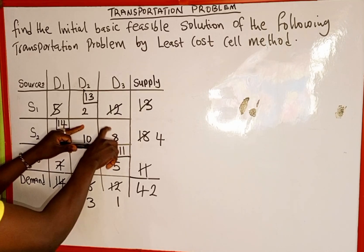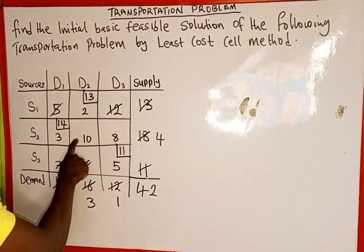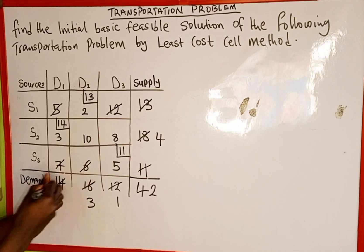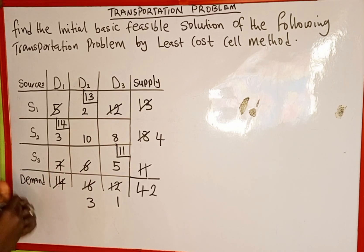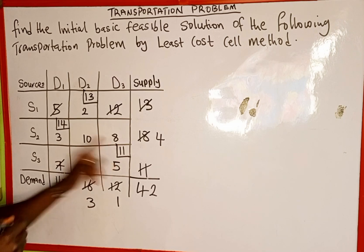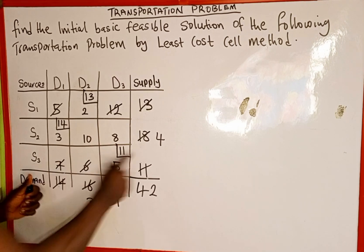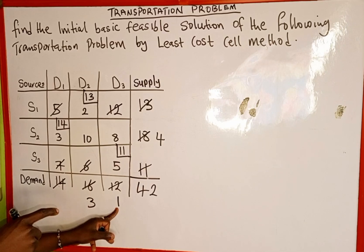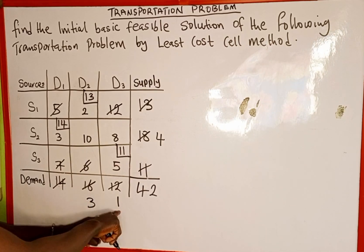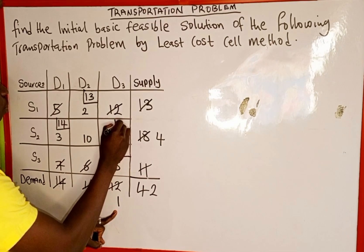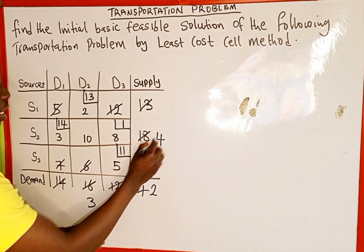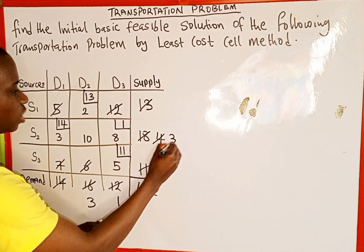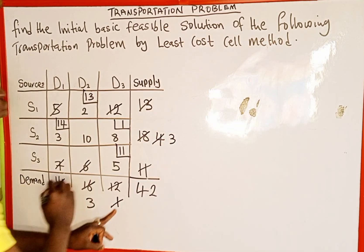We are left with 2 undeleted values: 8 and 10. The least is 8. We compare the supply and demand corresponding to cell 8, which are 4 and 1. The minimum is 1, so we allocate 1 here. Then 4 minus 1 leaves a remaining supply of 3. We delete the demand of 1.